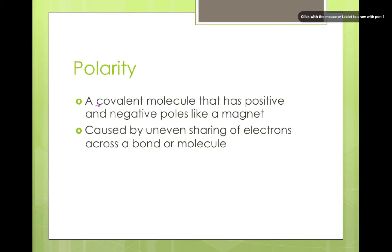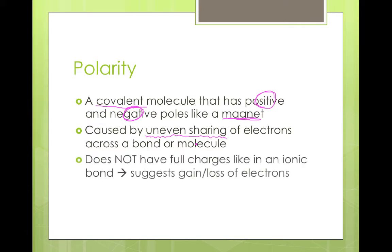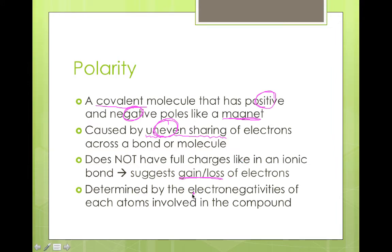Polarity is a characteristic of covalent compounds that have positive and negative poles just like a magnet. We normally think of positive and negative poles as being ionic compounds but this can also occur when there's an uneven sharing of electrons across a bond. Yes the two atoms in the bond are sharing the electrons but that doesn't mean it's an even sharing process. This does not create full charge particles like we would see in ionic bonds. This is just uneven sharing, a world that lives between a covalent bond and an ionic bond. This uneven sharing is determined by the electronegativities of the individual atoms involved in the bond.